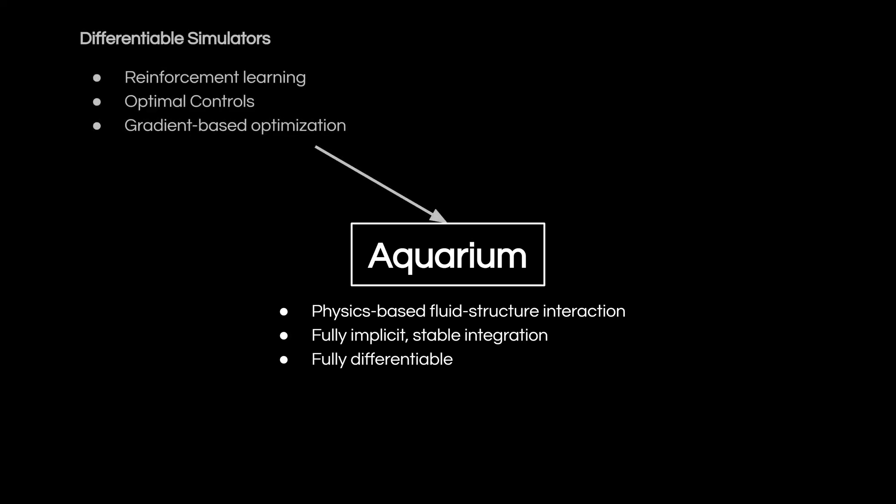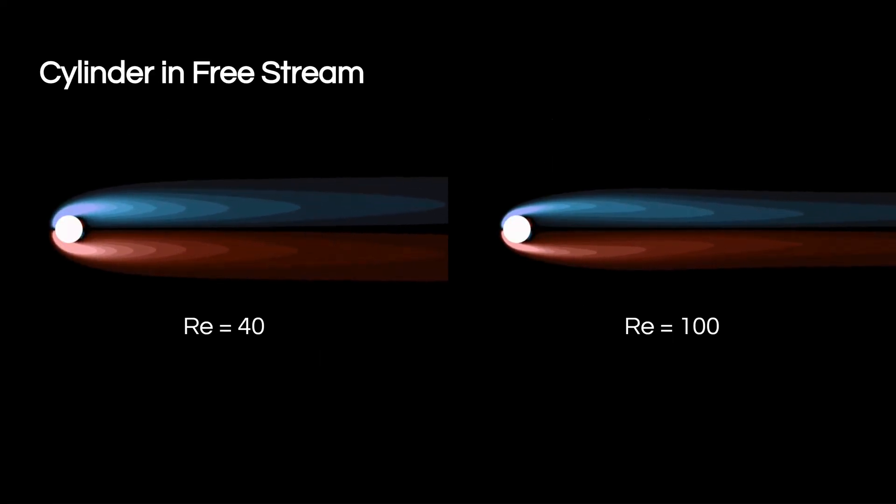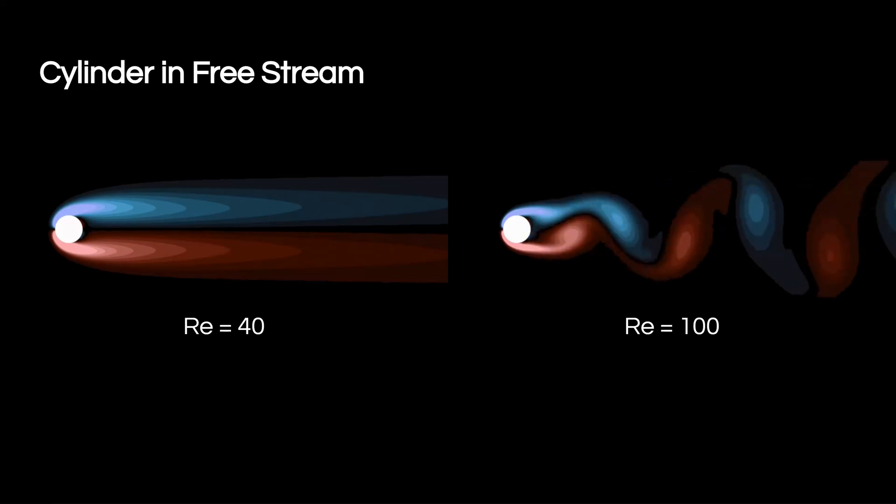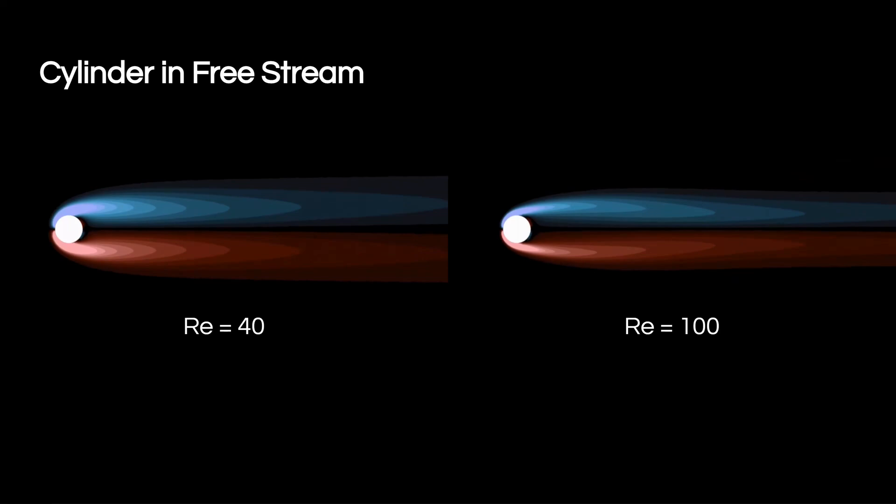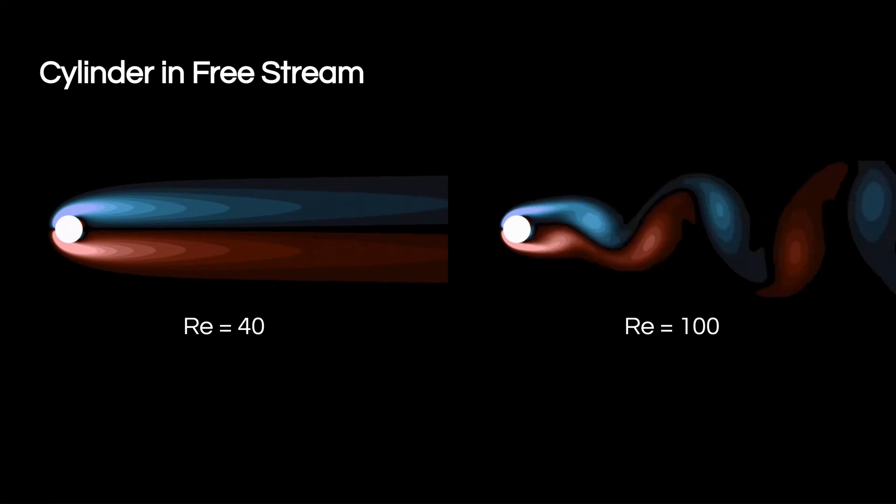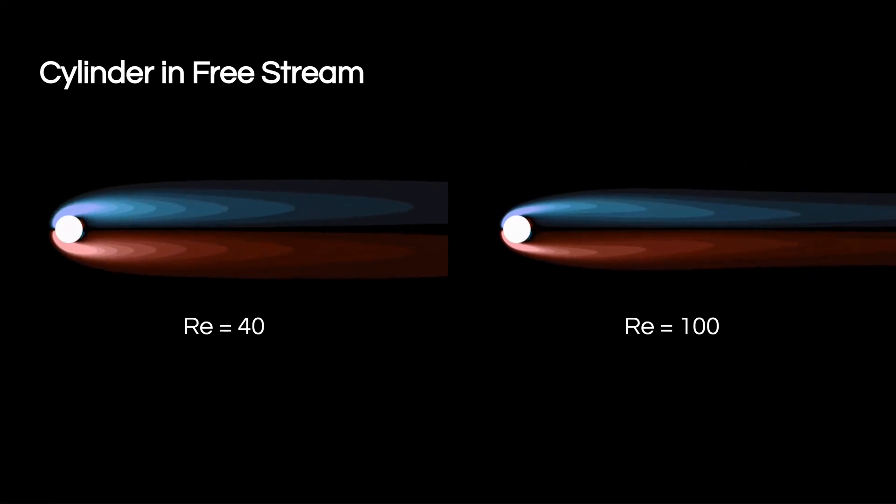This solver aims to bridge the gap between differentiable simulators in robotics and computational fluid dynamics methods. For benchmarking, we simulate the flow over a cylinder in free-stream conditions. Aquarium is able to properly generalize across varying Reynolds numbers to simulate the corresponding flow phenomenon. We also achieve good agreement with prior empirical and numerical works and refer to our paper for specific numerical values.